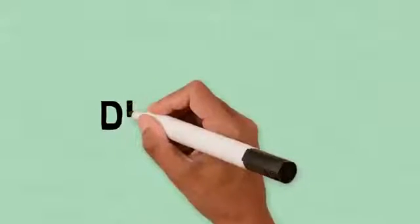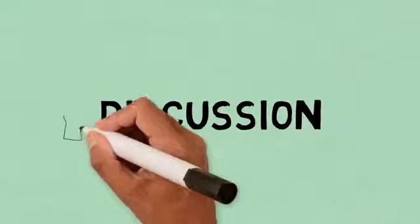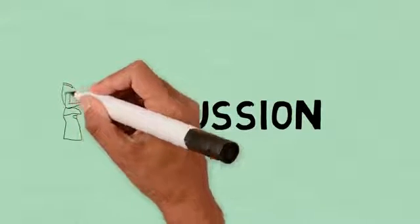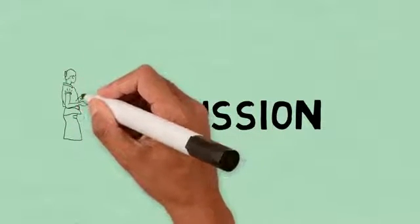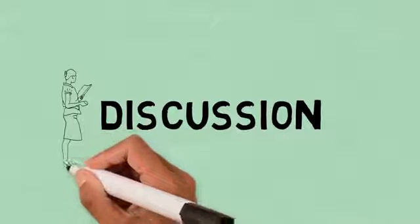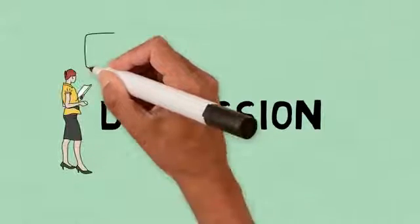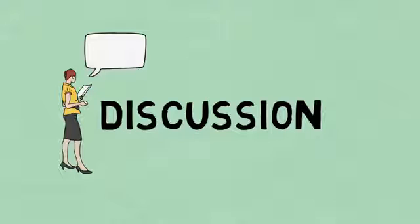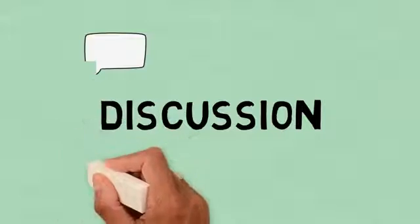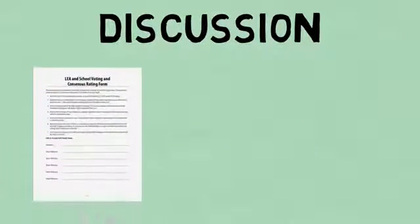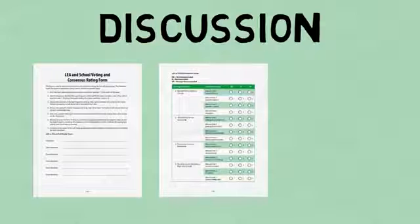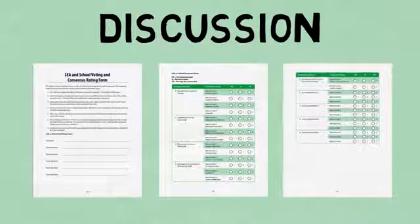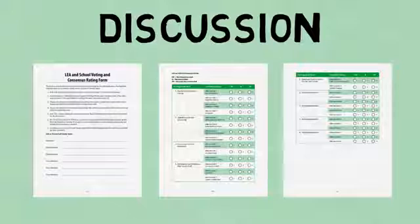Step 2 is Discussion. After the LEA or school scoring templates and scoring guides have been completed, a facilitator guides the team through a voting process and discussion of the interventions and individual ratings. This promotes thoughtful consideration of interventions the LEA or school may wish to implement. The facilitator uses the voting and consensus rating form to record the team's recommendation for each intervention after the team votes, engages in discussion, and comes to consensus.